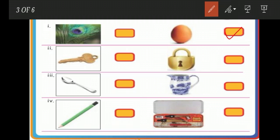Then key and lock. Which one? Second one, lock. Now we tick the heavier object only. Then spoon and jug. Jug is the heavier object. Then pencil and box. Geometry box is the heavier object.